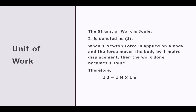The unit of work is joule, denoted as J. One joule of work is defined as when one newton force is applied on a body and that force is able to move the object by one meter displacement. So when force is one newton and displacement is one meter, the work done is one joule. Therefore, to do one joule of work, we need to apply one newton force and that force must move the object by one meter. The unit of work is joule.